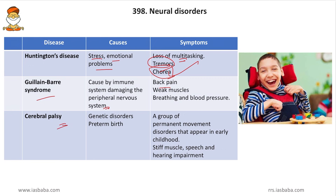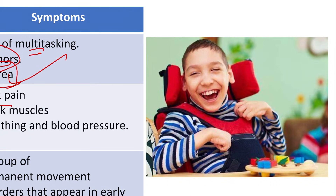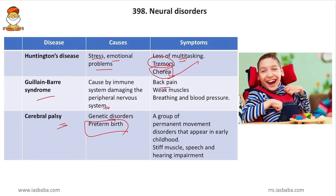Cerebral palsy is a genetic disorder that can also be caused by preterm birth. Patients exhibit weak muscle coordination, weak brain coordination, lack of speech, and hyperexcitability. It is a group of permanent movement disorders appearing in early childhood — children cannot walk or stand on their knees because their knee joints are weak — along with stiff muscles and speech and hearing impairments.